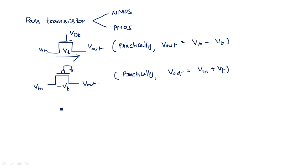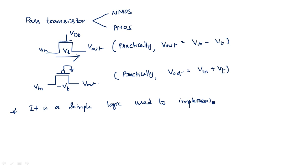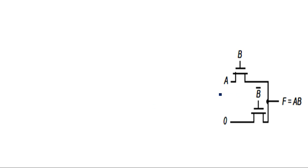What is the use of pass transistor logic? Pass transistor logic is simple — we can use it to implement any type of logical circuit. The main advantage is that with very few transistors we can still represent logical functions. For example, if you want to implement an AND operation, we can do so with pass transistors.